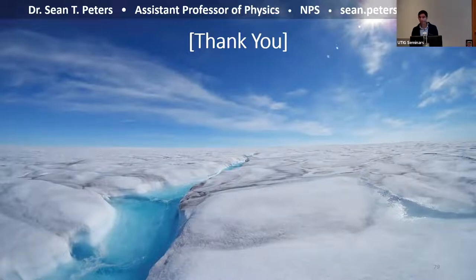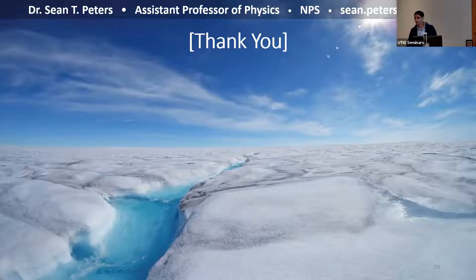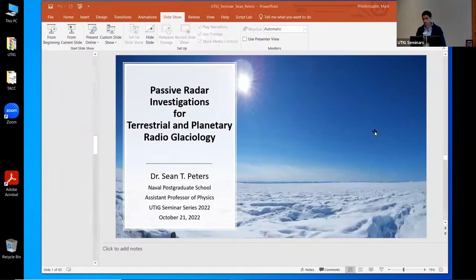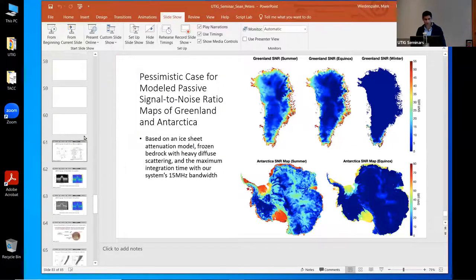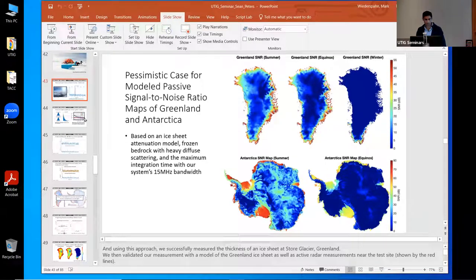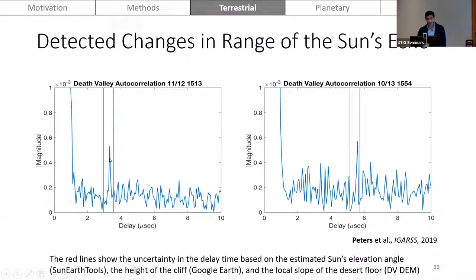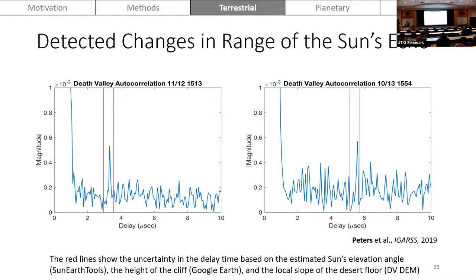Christopher asks: in the Death Valley and ice sheet experiments, the plots show a very sharp peak in the autocorrelation at the reflection — basically only one sample. With roughness, one might expect some spread. Sean replies: we did check the spread; it is a couple of samples on both sides, which is actually what we expect because we're matching white noise. We did look at roughness and simulate it as well, and it matches what we expected.